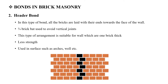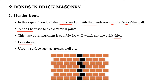Next is the Header bond. In this type of bond, all the bricks are laid with their ends towards the face of the wall. The vertical joints are staggered by half a brick. The Header bond provides less strength compared to other bonds.